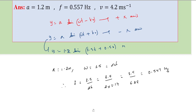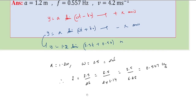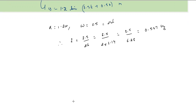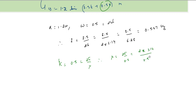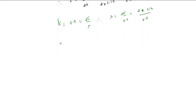To find velocity we need λ. We know k = 0.5 = 2π/λ, so λ = 2π/0.5 = 2 × 3.14/0.5 = 6.28/0.5 = 12.56 meters. So we now have both λ and f.